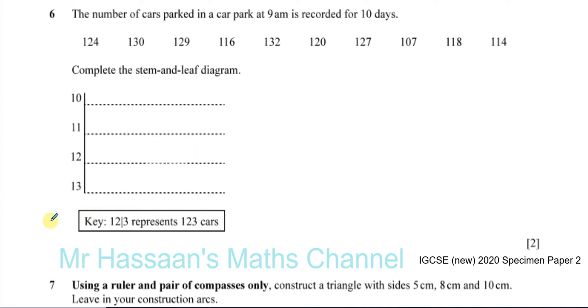A stem and leaf diagram should always have a key, so we know exactly what that represents. Basically, here we can see that the hundreds and the tens digits are represented before the line, before the stem.